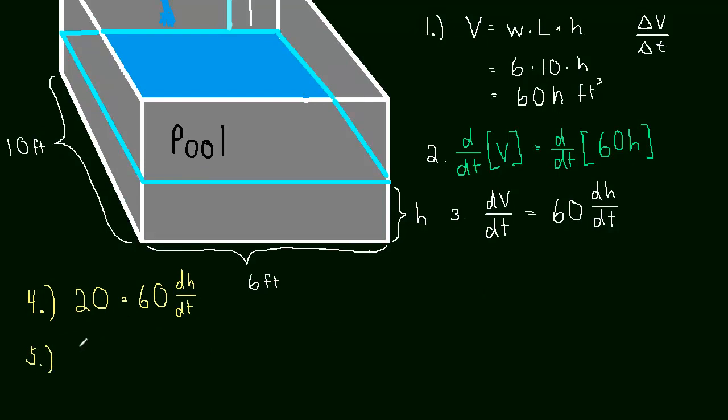So now all we have to do is solve for dh/dt. So we're just going to divide by 60. We're going to get 20 divided by 60 is equal to dh/dt. And so that is one third foot per hour.